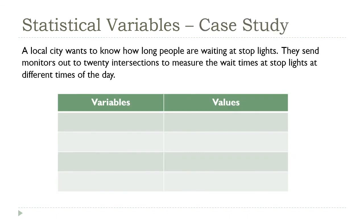Here's another example. A city planning commission is looking at the effectiveness of stoplights — to determine if any changes need to be made, they need to monitor wait times at selected lights throughout the city. See if you can come up with some variables that would apply to this situation. Remember, you're thinking about things that can be observed or measured.